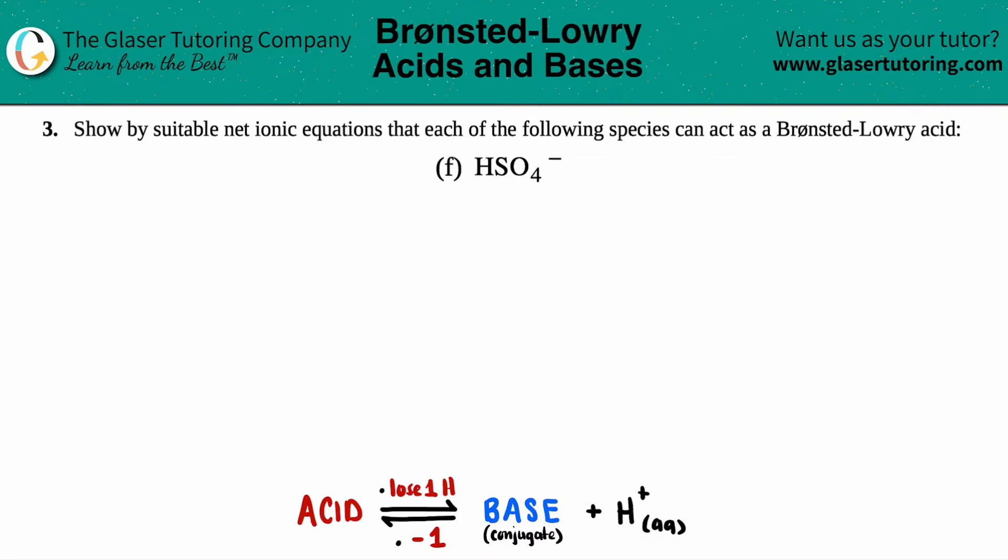Number three, show by suitable net ionic equations that each of the following species can act as a Bronsted-Lowry acid. And then we have the last letter out of the bunch, which is letter F. So in this case, we have to just write an equation that states that HSO4- will be a Bronsted-Lowry acid.